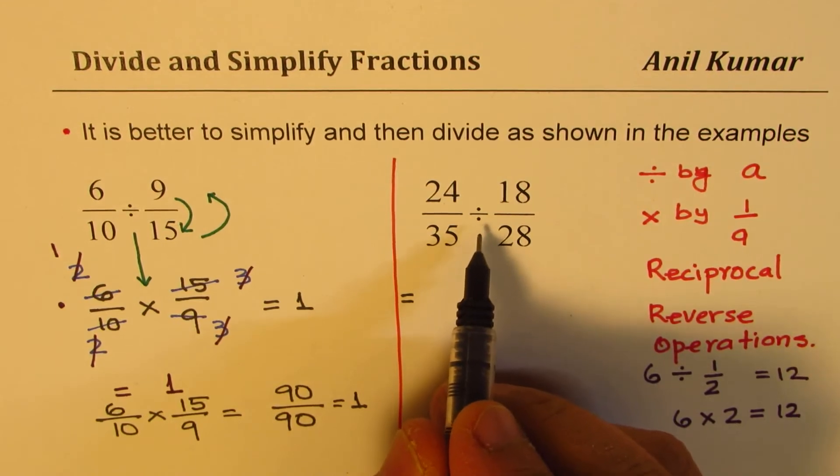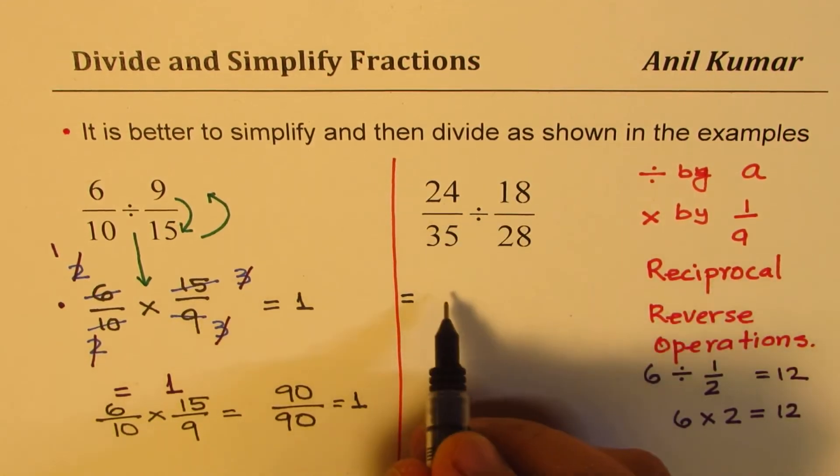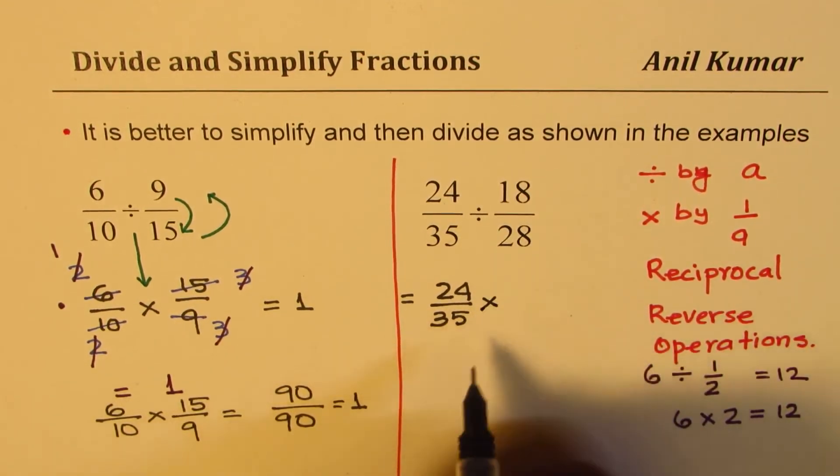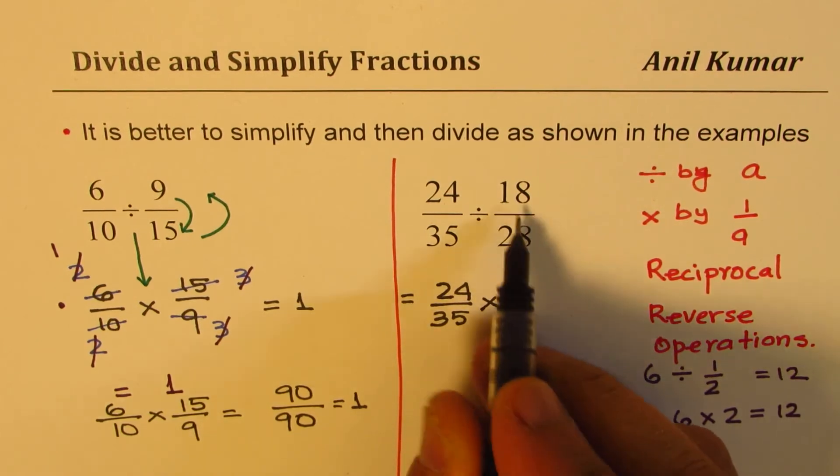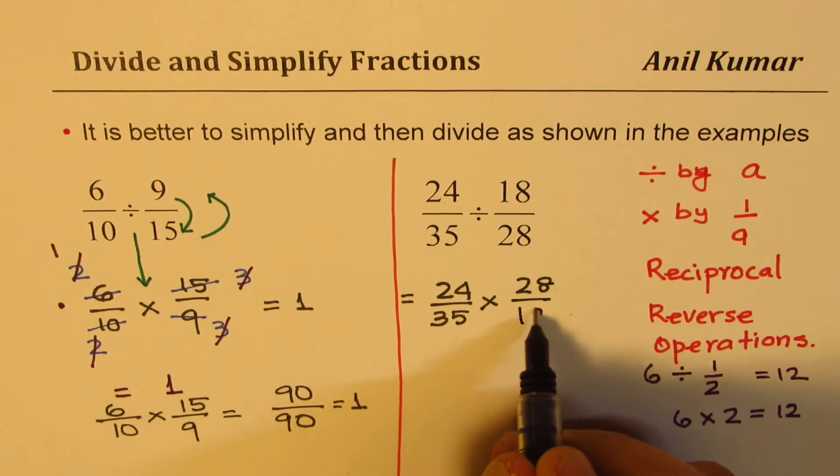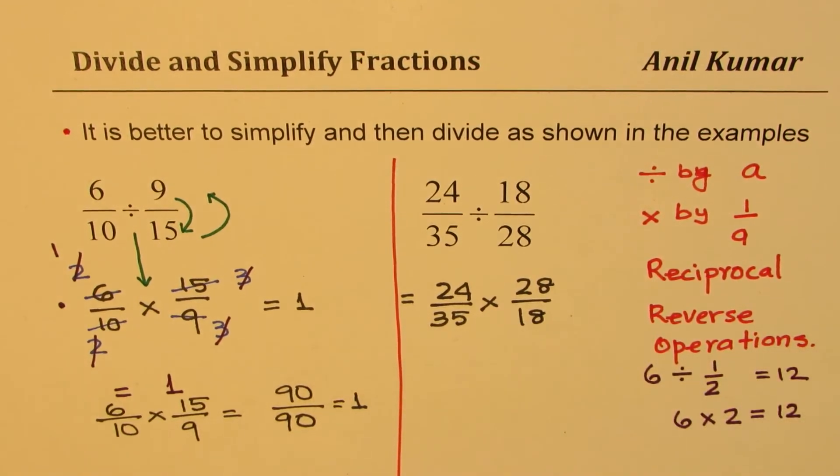So the first step is write the question changing division to multiplication. And when you do that, you have to flip. So 28 over 18 will be the result. Now we need to simplify—look for common factors in both.